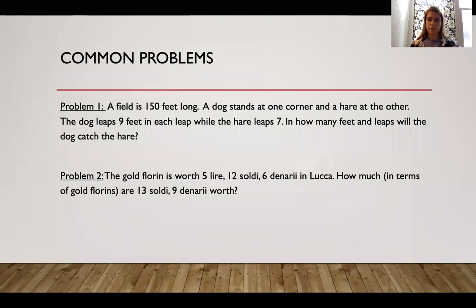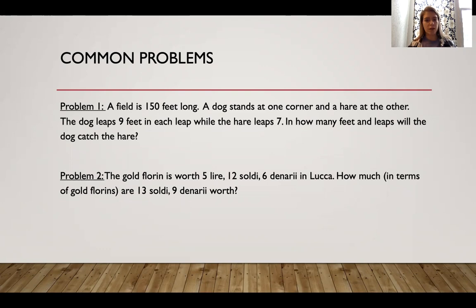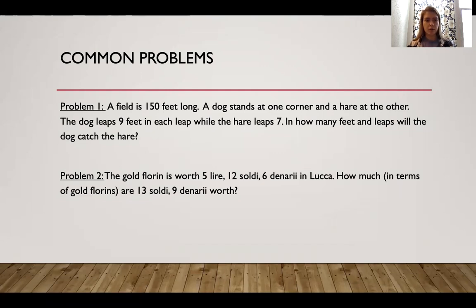Some common problems we might have seen in Renaissance math: number one, my favorite — if a field is 150 feet long, a dog stands at one corner and a hare at the other, the dog leaps nine feet in each leap and the hare leaps seven feet, how many leaps would the dog catch the rabbit? Another problem: the gold florin is worth five lyre, 12 soldi, and six denarii in Lucca, but how much in gold florins are 13 soldi nine denarii worth? These are simple algebra problems, just linear problems, but they were common in mathematical texts.